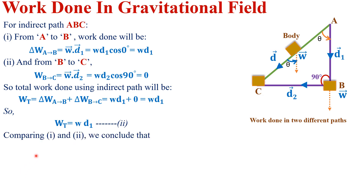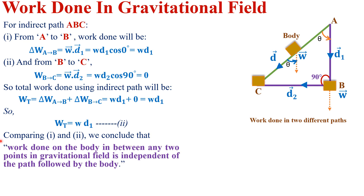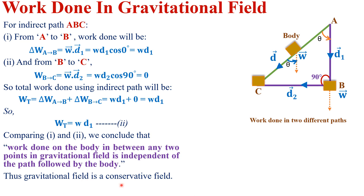Comparing equation one and equation two, we conclude that work done on a body between any two points in a gravitational field is independent of the path followed. Work done in the direct path A to C equals w·d1, and work done in the indirect path A-B-C also equals w·d1. Thus, gravitational field is a conservative field, in which work done is independent of the path followed.